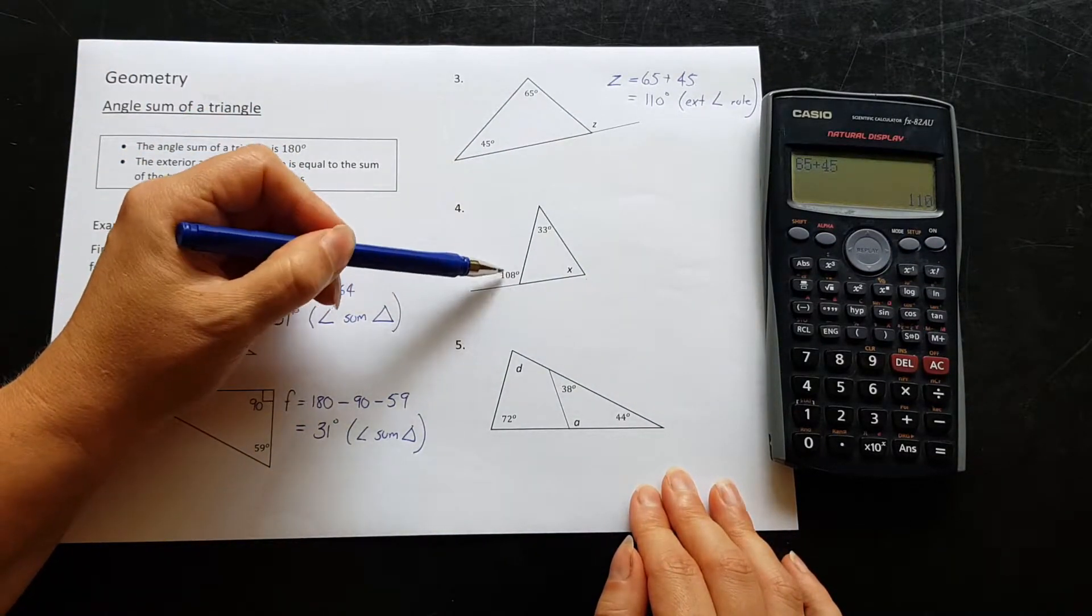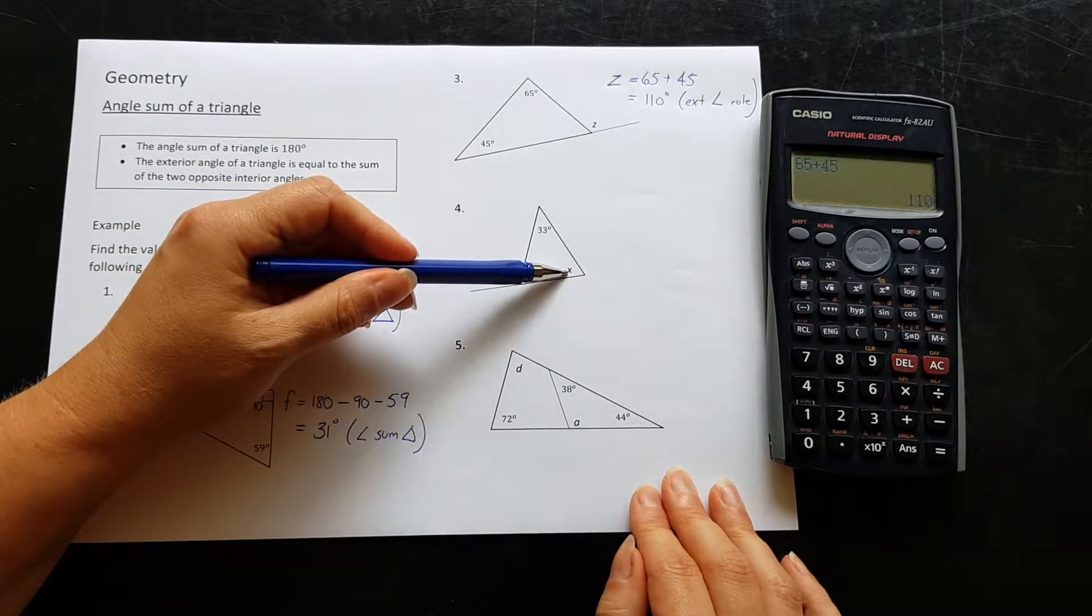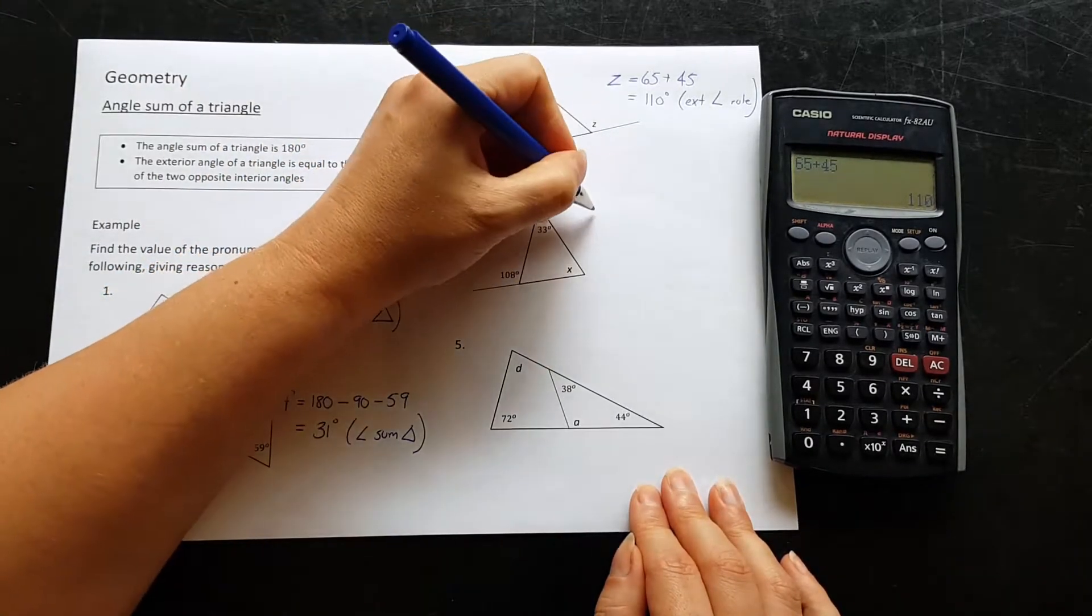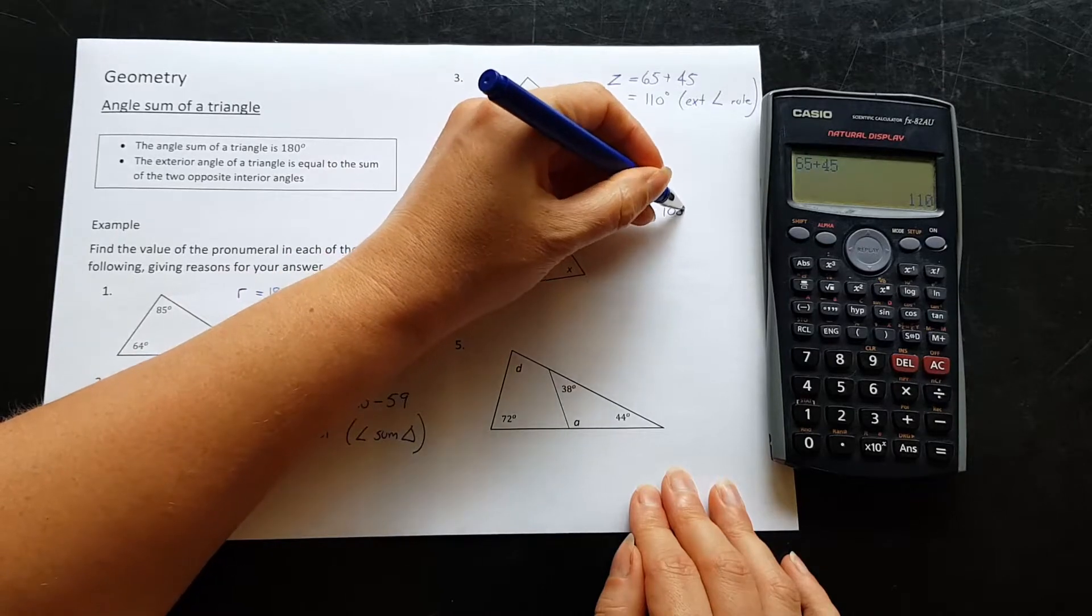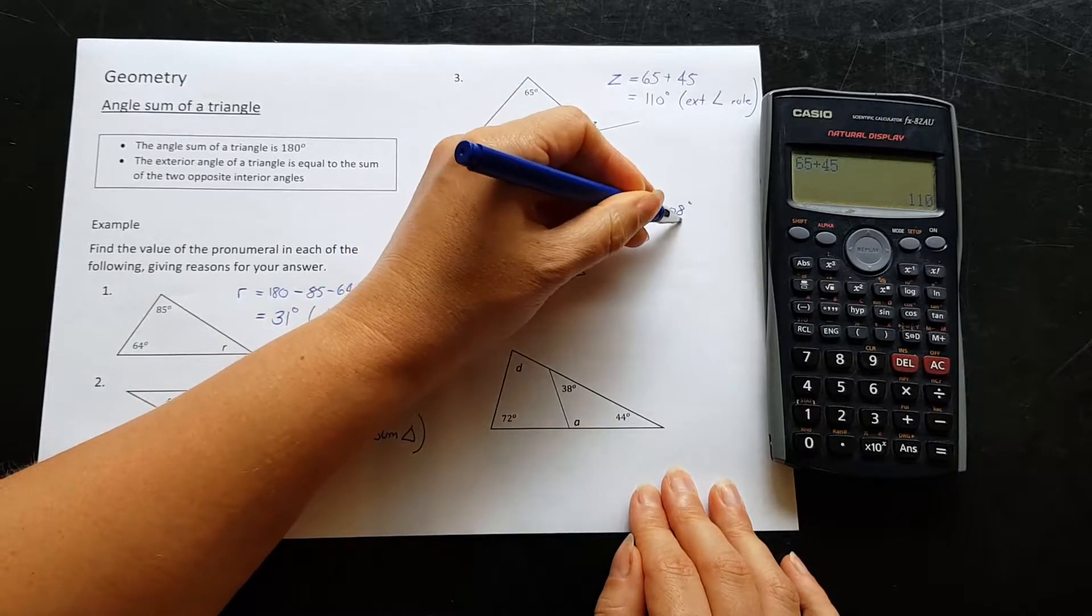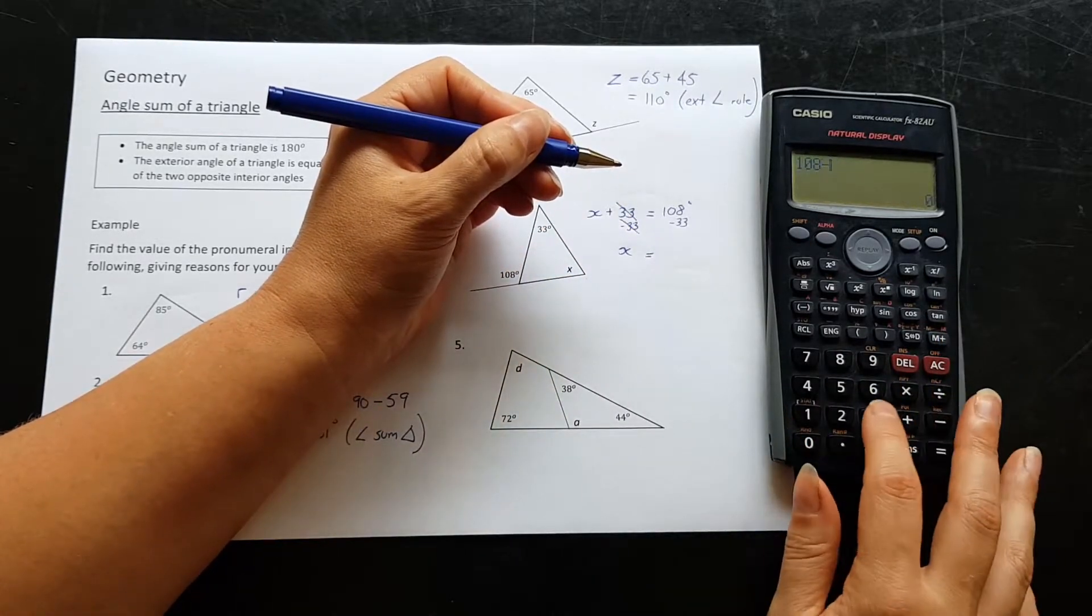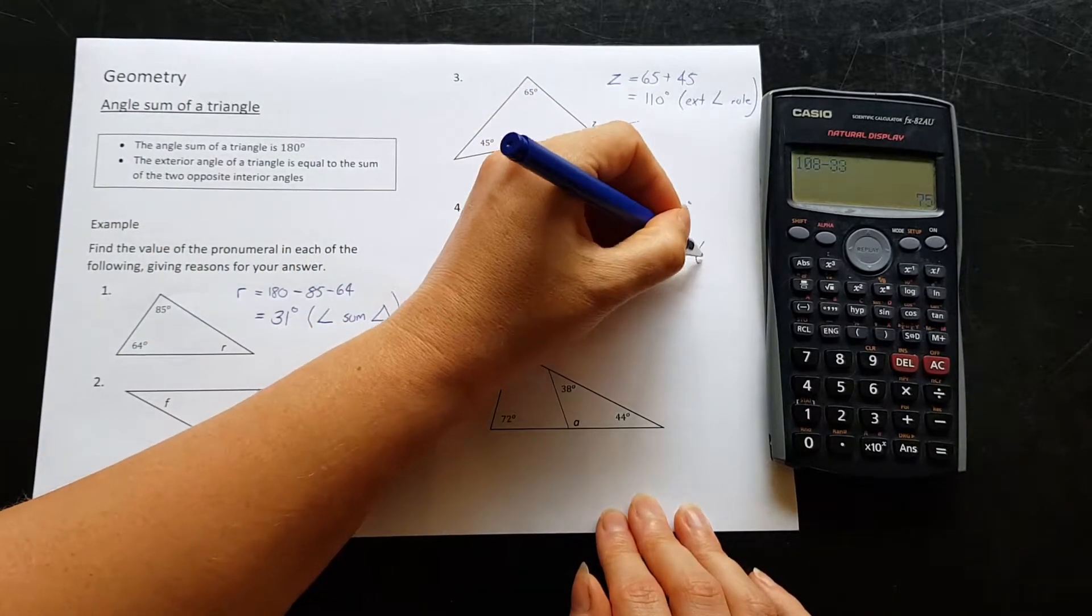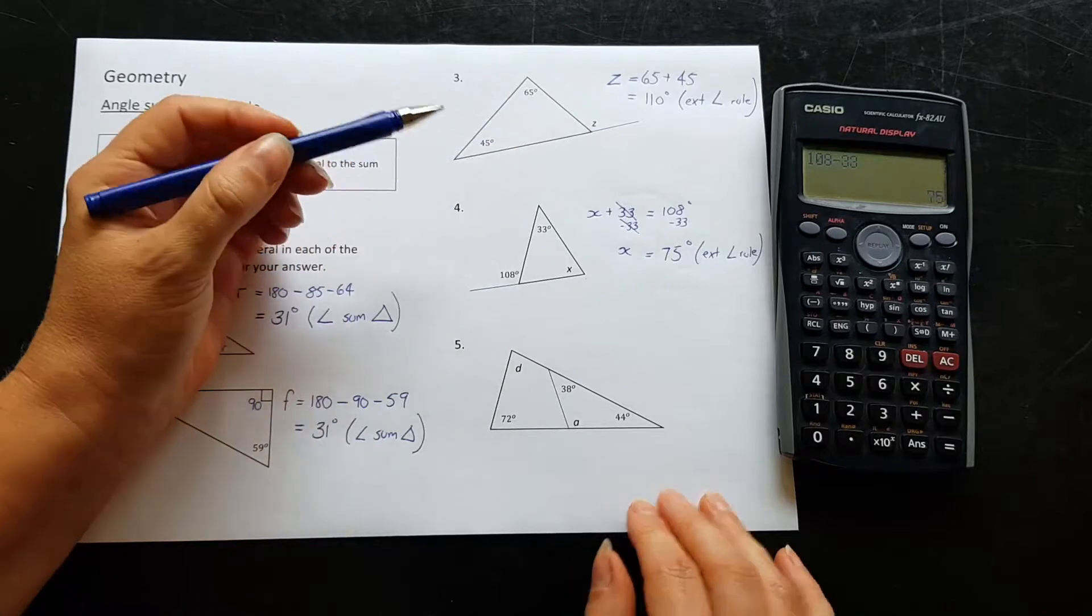Okay, question four. I obviously have an exterior angle out here, but this time I'm not finding an exterior angle. I'm finding one of the interior ones. Now I know that these two here add together to give this one, so I can write down x plus 33 is equal to 108. So to get x by itself, I just have to move the 33 away, so subtract that from both sides. x is going to be equal to 108 minus 33, which is 75 degrees. So that's still the exterior angle rule. The exterior angle rule, we have just kind of reversed it a little bit to find one of the interior angles from the rule.